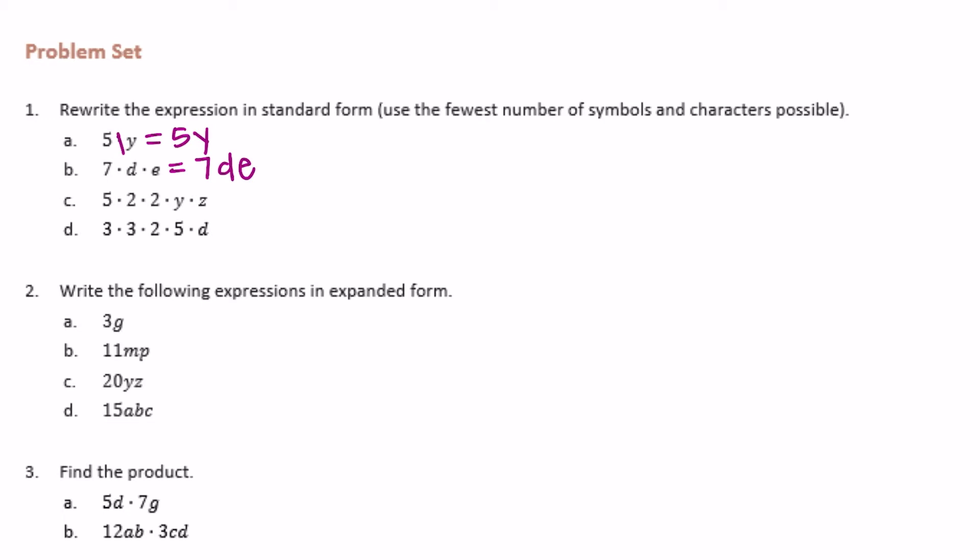C: 5 times 2 times 2 times y times z. Now we can multiply 5 times 2 times 2. 5 times 2 is 10, times 2 would be 20, so I'm going to simplify it to 20yz.